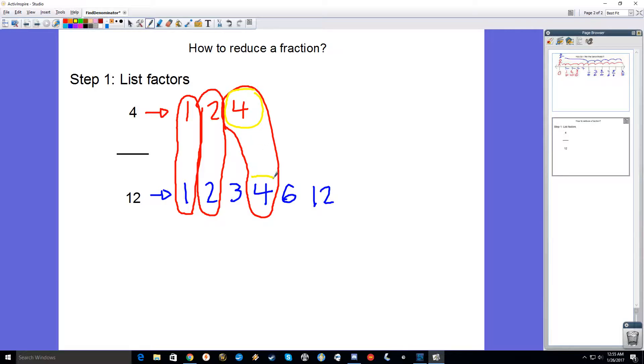4 on top, 4 on bottom. And you're going to divide both numbers with the highest number they have in common. So if we look here, 4 divided by 4 equals 1. And for your denominator, 12 divided by 4 equals 3.